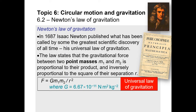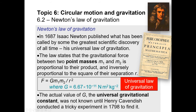The universal gravitational constant 6.67×10⁻¹¹ was determined through the Cavendish experiment. If you're interested, there are many resources online to study it further. Simply understand what the name is and that it was used to determine G.